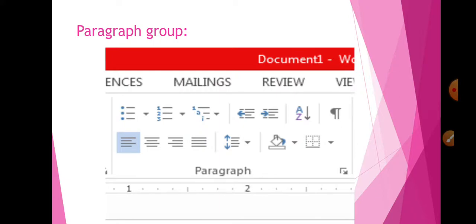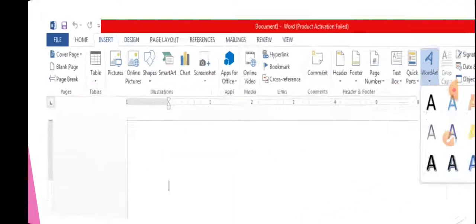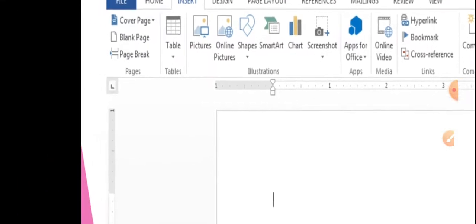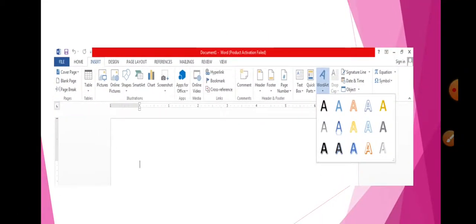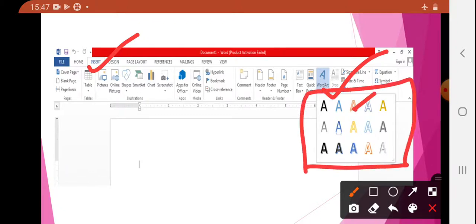This is your Paragraph Group. Now we will see how to insert WordArt. In your Insert tab you will get WordArt and you can choose the style whichever you want. Click on Insert, then click on WordArt. You will see different patterns of WordArt — choose any one. Whatever text you are writing will appear in that pattern only.